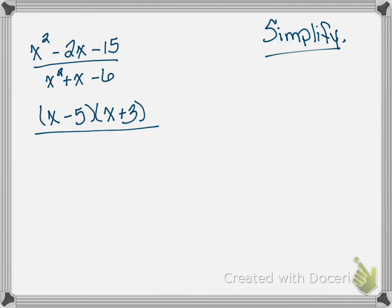So x squared minus 2x minus 15 factors to x minus 5 and x plus 3. The bottom is x squared plus x minus 6 — we factor that as well. The product we're looking for is negative 6 and the sum is positive 1. Our a value is 1, so that gives us x plus 3 and x minus 2. We then look at what shows up in both the top and the bottom and cancel it — x plus 3 appears in both.